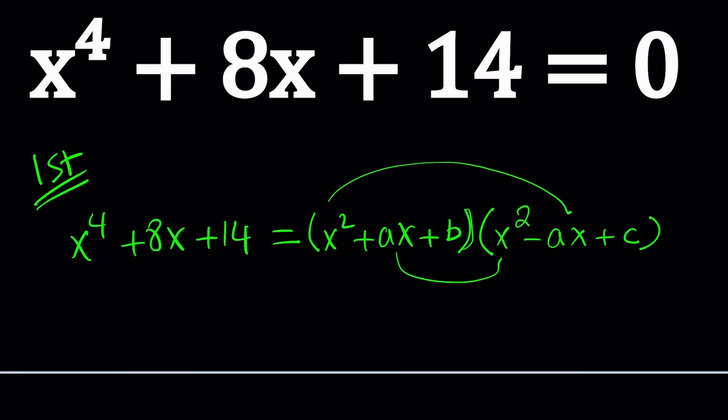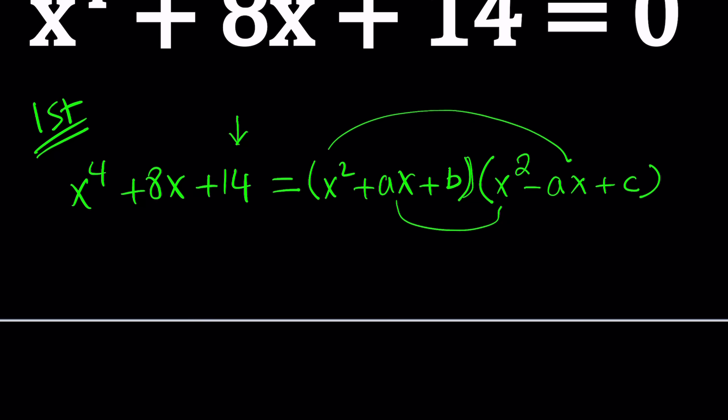But one thing we know, the constant term on the left hand side is 14 and the right hand side is bc. So bc equals 14 is a fact that you can derive from here. But we're going to derive more facts, more equations, because these are two polynomials that are equivalent for all values of x that are in the domain, which is the set of real numbers.